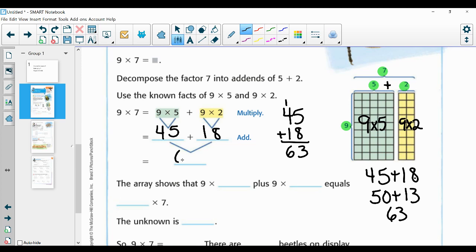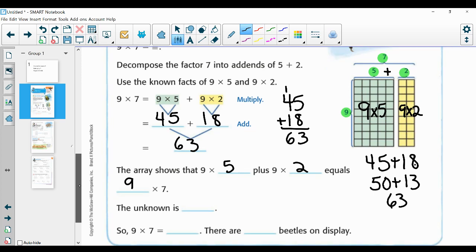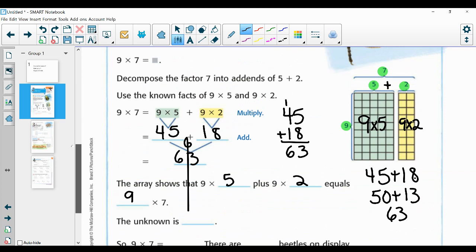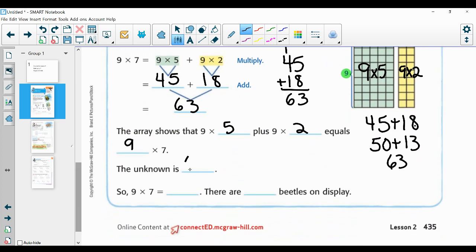So the nine times seven is sixty-three. The array shows that nine times five plus nine times two equals nine times seven. The unknown is sixty-three. So nine times seven equals sixty-three. There are sixty-three beetles on display.